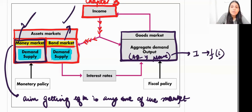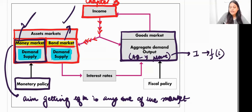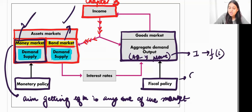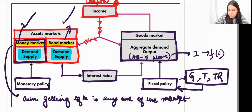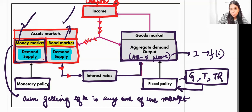Whenever we talk about changes the government brings in the asset market — whether in the money market or bonds market — it is known as monetary policy. Whenever the government changes the AD equation by changing government expenditure, taxes, or transfers, these are part of fiscal policy. From the asset market I will derive the interest rate, and then at that interest rate I will derive the equilibrium of the goods market. So I will derive the equilibrium interest rate from the asset market and then, at that equilibrium interest rate, I will derive what happens in the goods market.